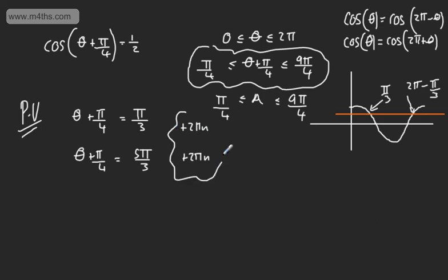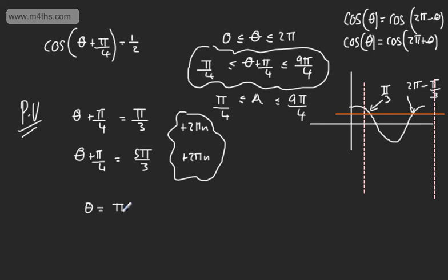We're interested in this from pi by 4 to 9 pi by 4. We can see there are two solutions in the given interval. Subtracting pi by 4 from the first: theta equals pi by 3 minus pi by 4, which is pi by 12. For the second: theta equals 5 pi by 3 minus pi by 4, which gives 17 pi by 12. Subsequent solutions are clearly outside the interval. Alternatively, you could list out multiples — theta plus pi by 4 equals pi by 3, then pi by 3 plus 2 pi giving 7 pi by 3 — then subtract and check if it falls in the interval.